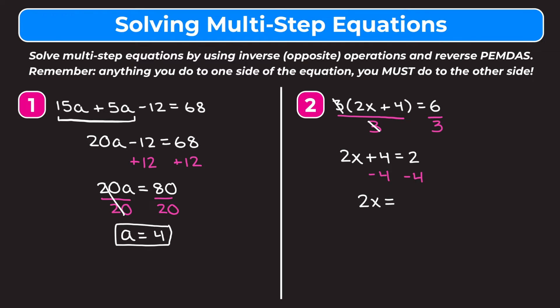On the right 2 minus 4 is negative 2. Finally we need to get rid of the 2 being multiplied by x, so we divide both sides by 2. The 2s cancel, leaving x. On the right negative 2 divided by positive 2 is negative 1. So x equals negative 1.